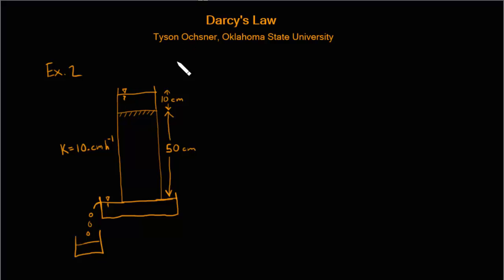You can see that on top of the soil column there is water ponded, so we have 10 centimeters of water ponded on top of the soil. The hatches here indicate the soil surface, and this solid line is the free water surface at atmospheric pressure, as indicated by the upside-down triangle. This soil column is 50 centimeters in length.